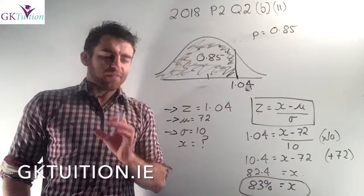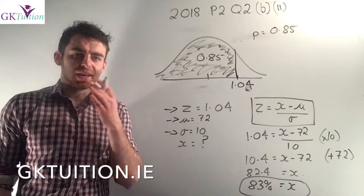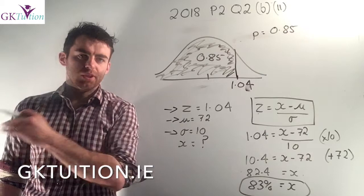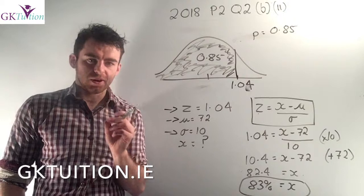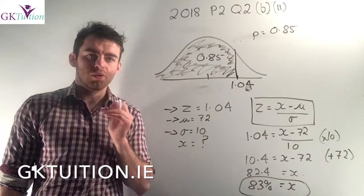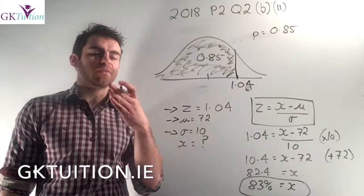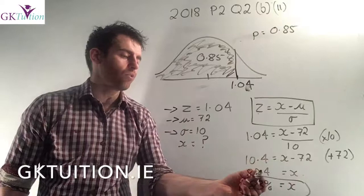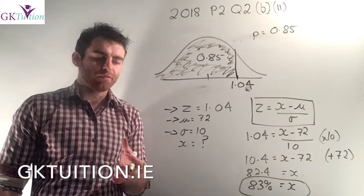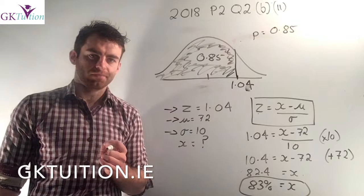So if a student got 82.4% in the English test, that result would have been better than 85% of the other students — just inside the top 15%. However, the question asks for the smallest whole number value that merits an A grade. You cannot round down, because rounding down means you're no longer better than 85% of students. You must round up: a student who got 83% in the English test would be in the top 15% and would merit an A grade.